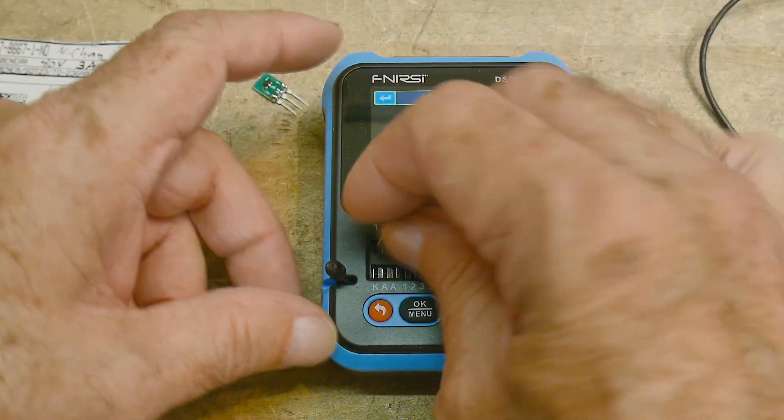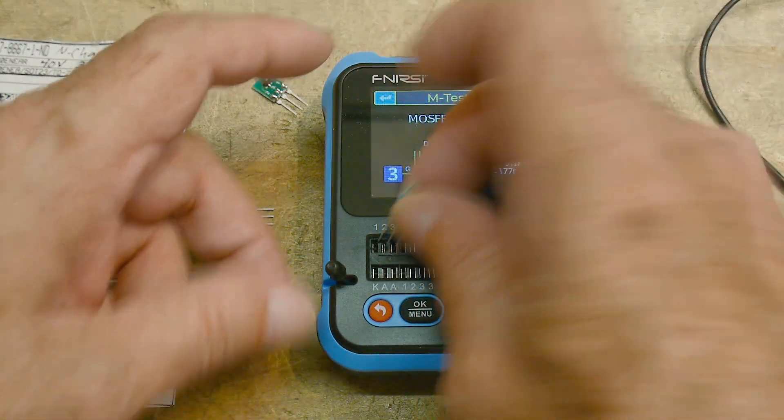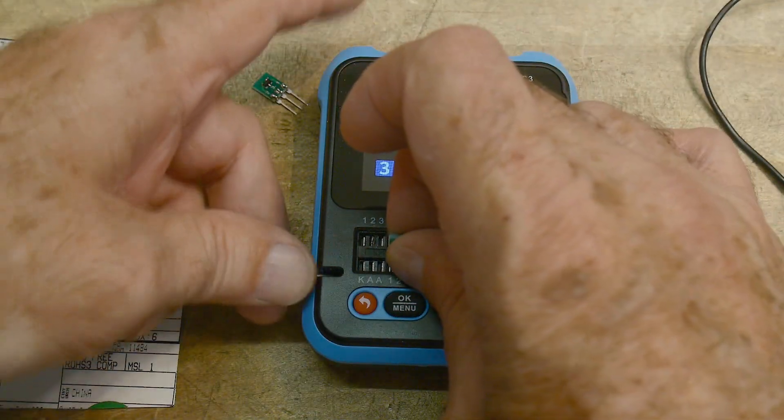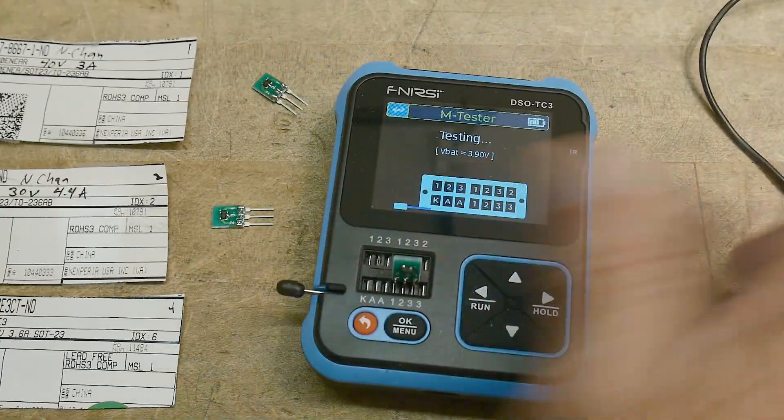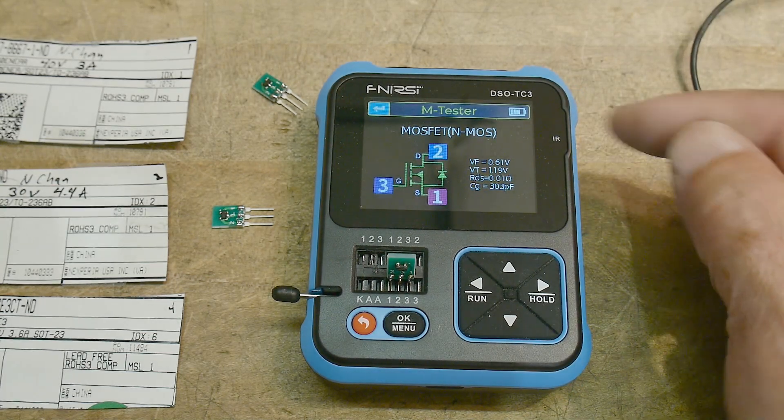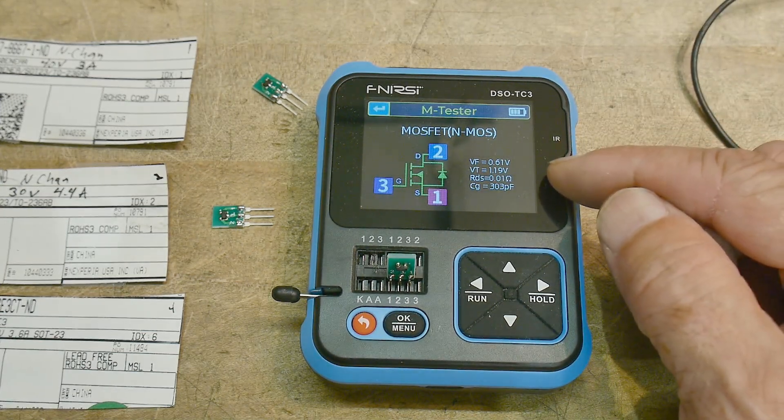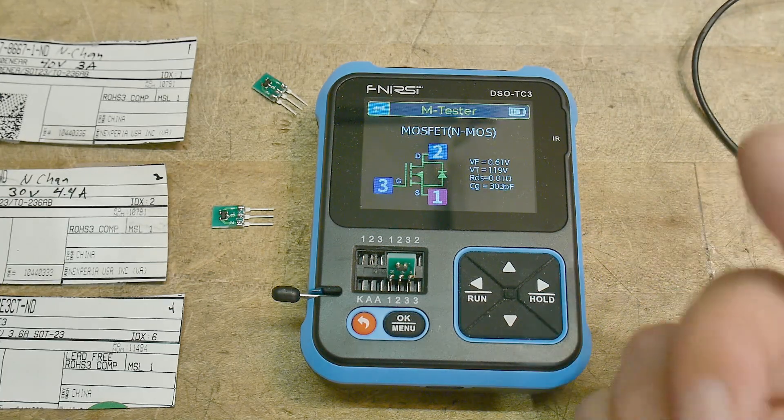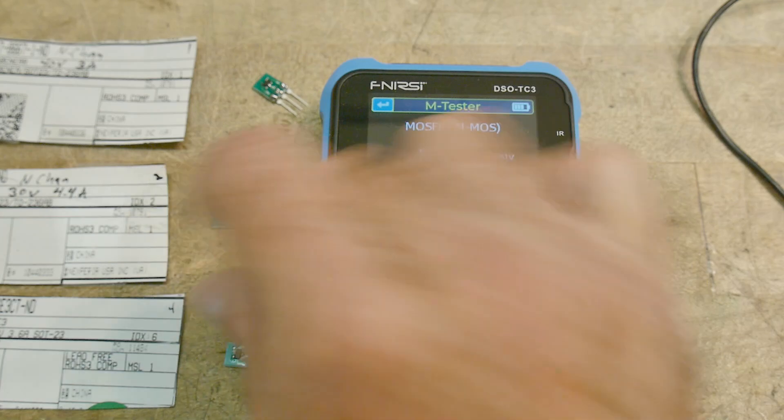And let's put this one in here. And oops. Yeah, that one's not really working very well. This socket's a little bit screwed up. There we go. 0.61 volt, 1.19 volt, 0.01 ohms on. So they're all going to be basically the same.